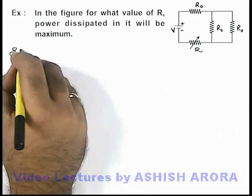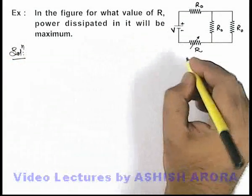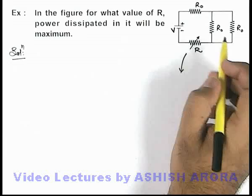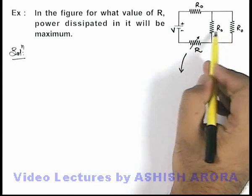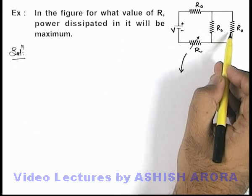Now to analyze the situation, we first simplify the circuit and reduce the combination of resistances. Here you can see that these two resistances are connected in parallel combination.